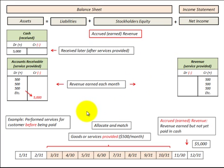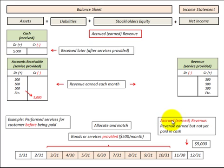So what is an accrued or earned revenue? An example: we've performed some services for a customer before being paid. Looking at the timeline from March through October, we have goods or services that we have provided to our customer — in this example at $500 per month. Those services or goods represent accrued or earned revenue. The revenue is earned but not yet paid in cash.